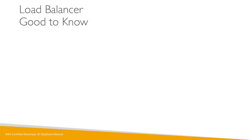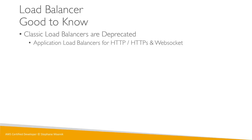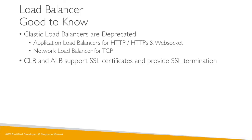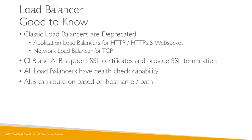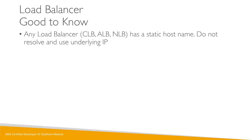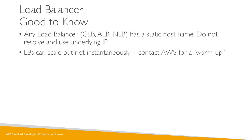Good to know: Classic Load Balancers are deprecated. Use the Application Load Balancer for HTTP, HTTPS, and WebSockets; use the Network Load Balancer for TCP. CLB and ALB both support SSL certificates and provide SSL termination. All load balancers have health check capability. ALB supports routing based on hostname and path and is a great fit with ECS or Docker. All load balancers have static hostnames — you get a URL and should always use that URL, never resolving it to an underlying IP. Load balancers can scale but not instantaneously, so contact AWS to warm up your load balancer if you expect a massive load.